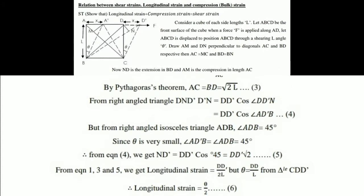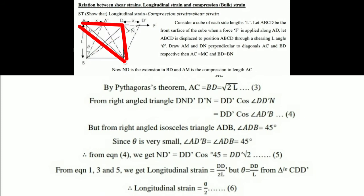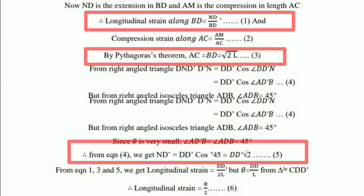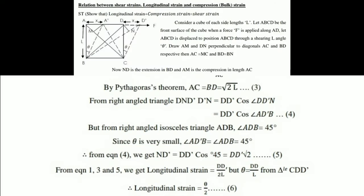In the right-angled isosceles triangle ADB, if angle ADC is 90 degrees then angle ADB is 45 degrees, and angle AD'B is also 45 degrees. From these equations, ND' equals DD' times cos 45 degrees. Cos 45 equals 1 over root 2, taken as equation 5. Combining equations 1, 3, and 5, longitudinal strain equals DD' divided by 2l. Since theta equals DD' divided by l, we substitute this in.